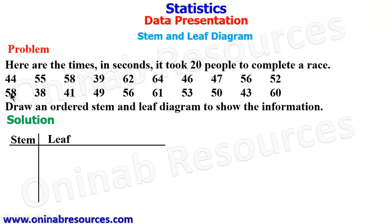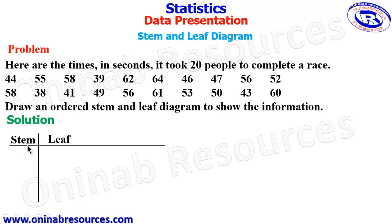Our stem in this case is going to be the tens digits while the leaf will be the units digits. For example, we have 58. While 5 is the tens digit and 8 is the units digit, we are going to have 5 under the stem column and then the 8 under the leaf column.